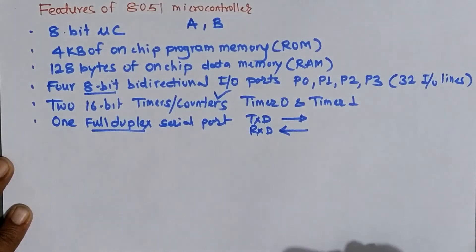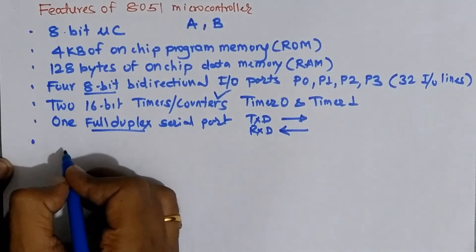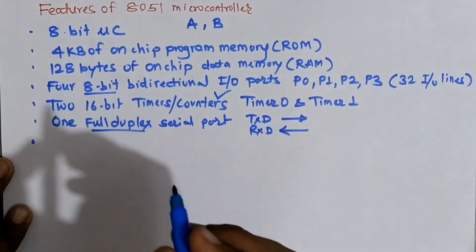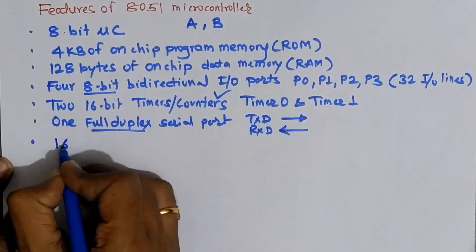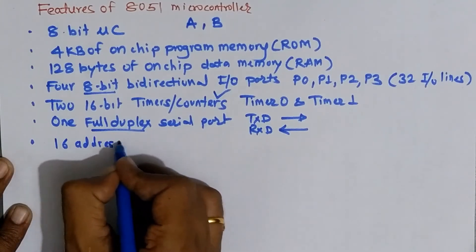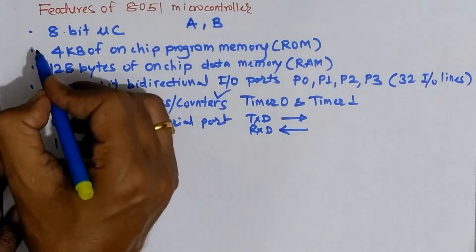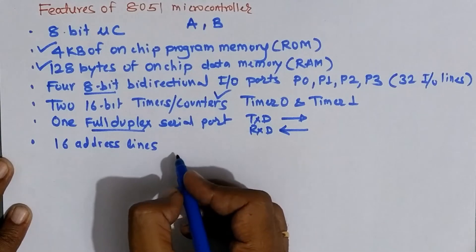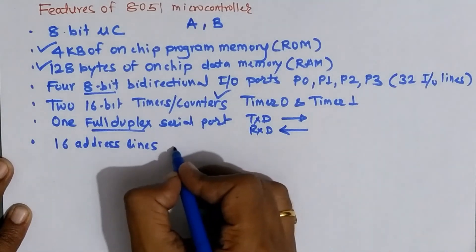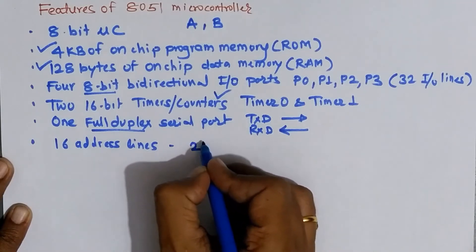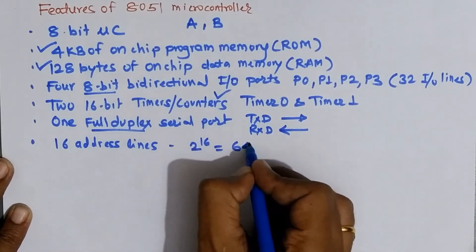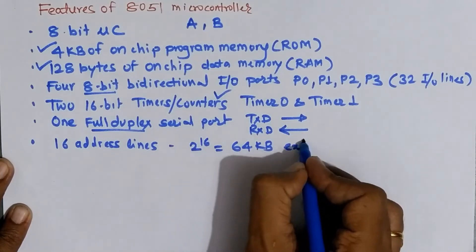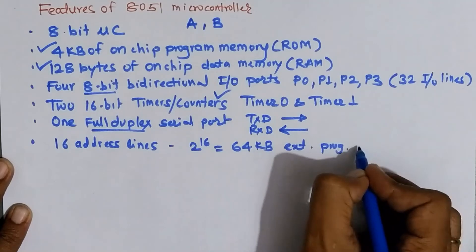And this port is also called as UART port that is Universal Asynchronous Receiver Transmitter. The next feature of 8051 microcontroller is it is having 16 different address lines. So 16 address lines means even if we are having some internal program memory and data memory we can connect or we have the facility of interfacing external memory also. And as there are 16 address lines 2 raised to 16 which comes to be 64 kilobytes of external program memory can be interfaced with microcontroller.